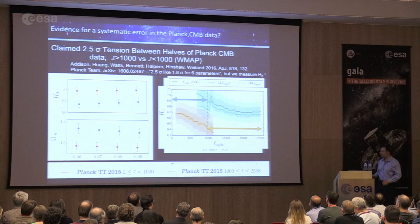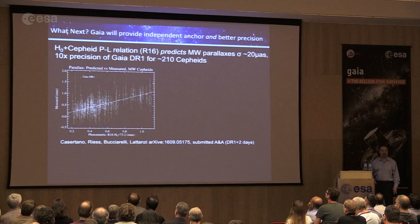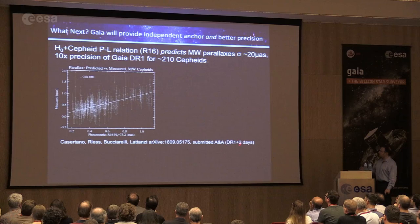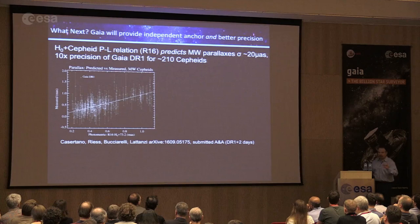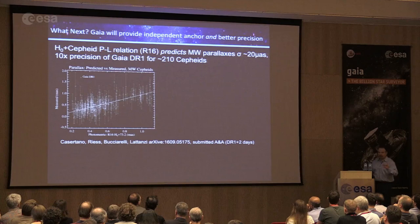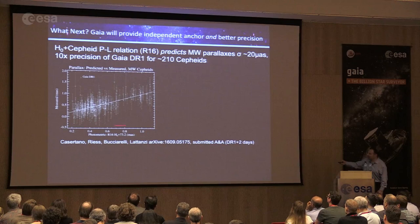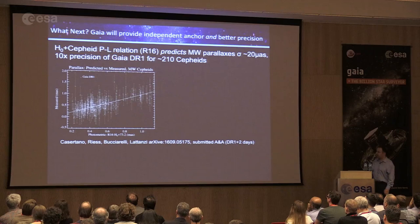Even Gaia DR1 gave us a powerful test of the Hubble constant measurement. Two days after DR1 came out, Casertano, myself, and two Italian collaborators quickly used the ~200 Milky Way Cepheid parallaxes measured to a mean precision of about 0.3 milli-arcseconds. We took our value of the Hubble constant and the Cepheid period-luminosity relationship from our analysis and predicted what the Gaia parallaxes should be. On one axis our predicted parallaxes, on the other the actual Gaia measurements — they agree pretty well.